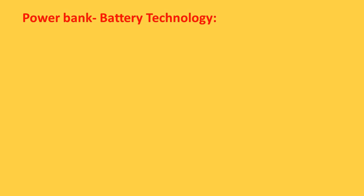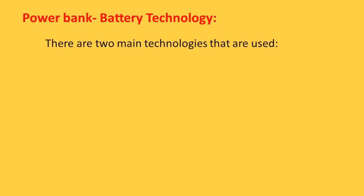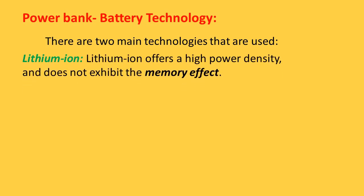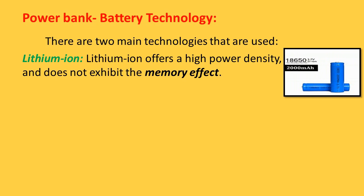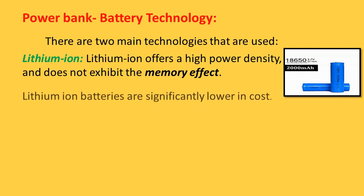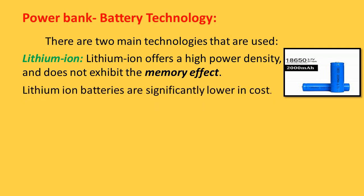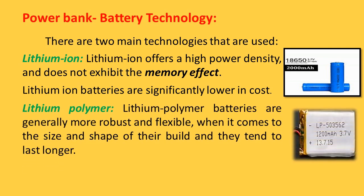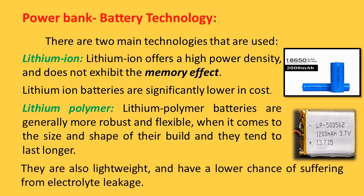Power bank battery technology: there are two main technologies used in power banks. First, lithium-ion — lithium-ion offers high power density and does not exhibit the memory effect; lithium-ion batteries are also significantly lower in cost. Second, lithium polymer — lithium polymer batteries are generally more robust and flexible when it comes to size and shape, tend to last longer, are lightweight, and have a lower chance of electrolyte leakage.